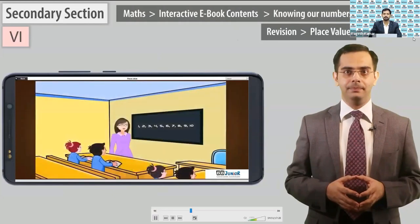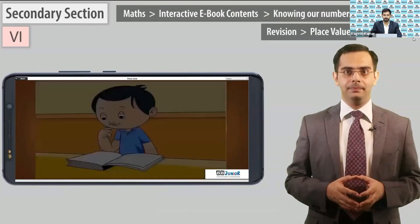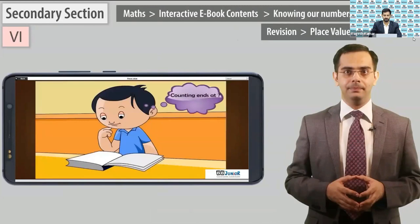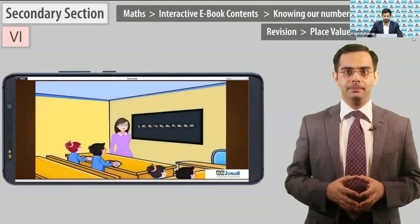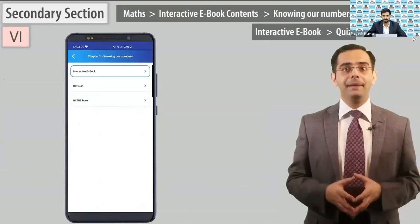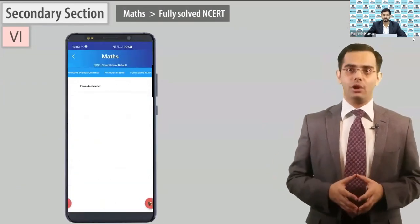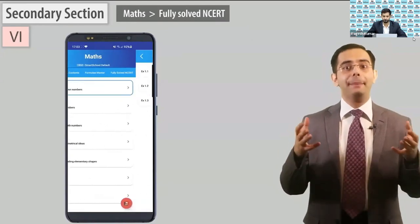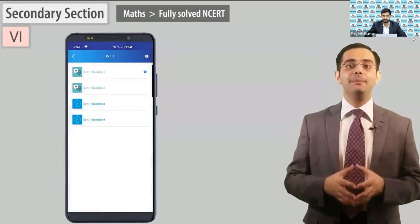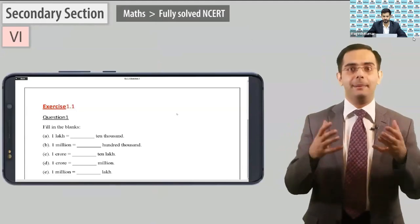Now play 'Place Value,' which is a purely animated module. Hello children — you all know how to count. Can you tell me where the counting ends? Can you think of the largest number in the number system? Now go to fully solved NCRT, and here explain that the NCRT book's solutions are present.